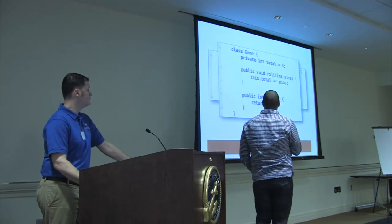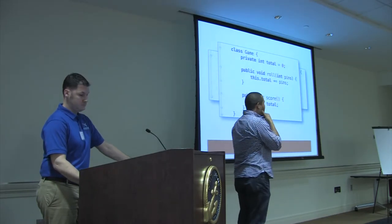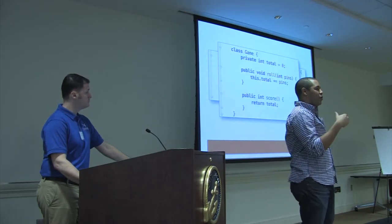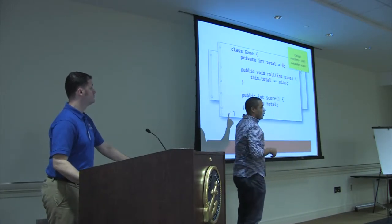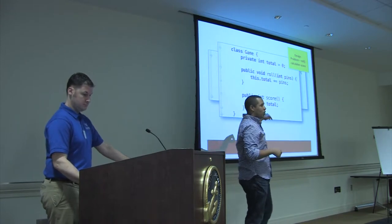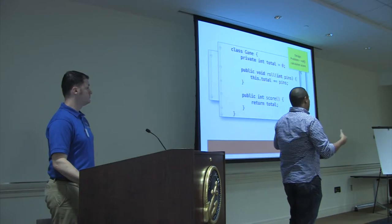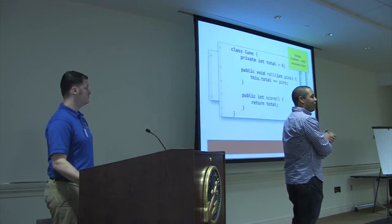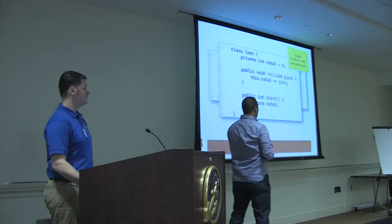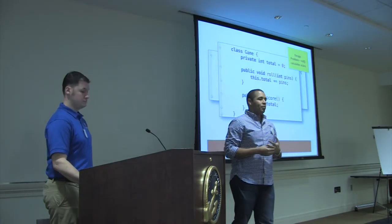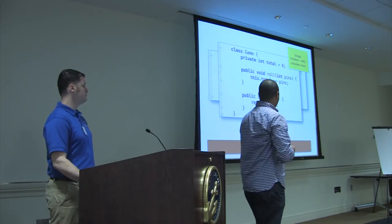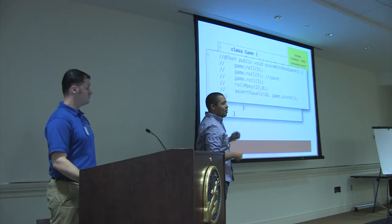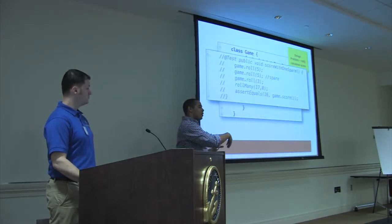We look at our game class and see a design problem: the roll method is poorly named because it should just capture the roll and store it, but it's actually doing the score calculation. Meanwhile the score method is doing nothing. We need to change our design. We'll use our tests to ensure that as we refactor, we didn't change anything. But we have a failing test for the spare already, so I'm going to comment it out temporarily. We're not going to add this feature yet — we'll fix the design first before addressing the failing spare test, otherwise it will be noise as we refactor.